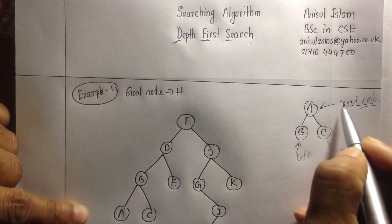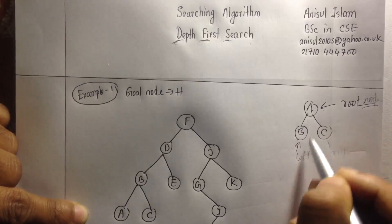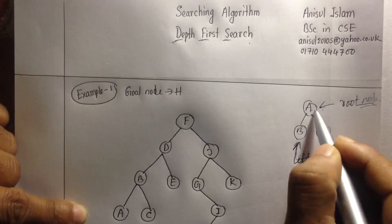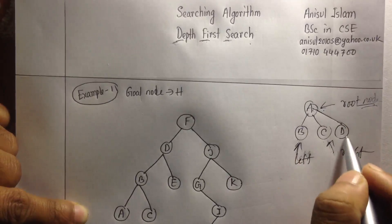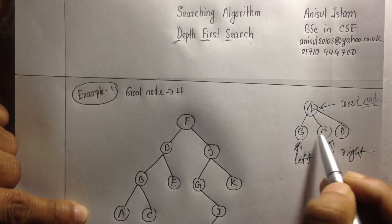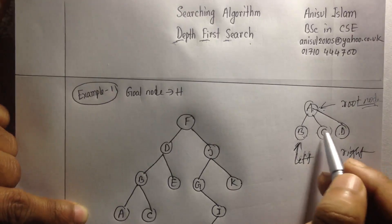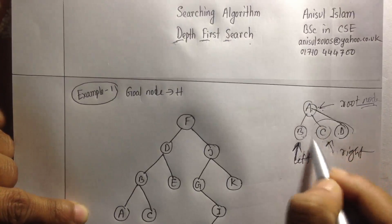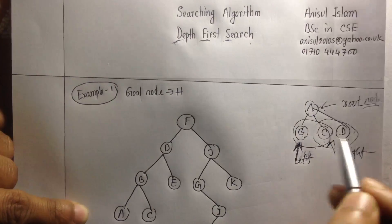Before starting with DFS, just make sure you understand these concepts. This one is a root node, this one is a left node, and this one is a right node. But if you have more than two nodes under the root — say B, C, D — then you may be confused about which is left and which is right. You can consider one as the left node and the others as right nodes, or vice versa — it depends on you.